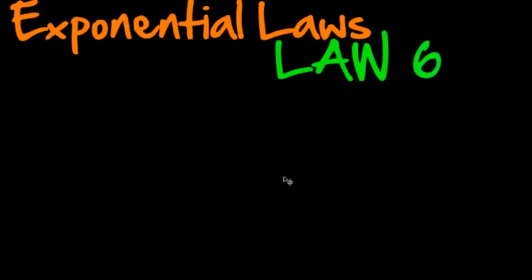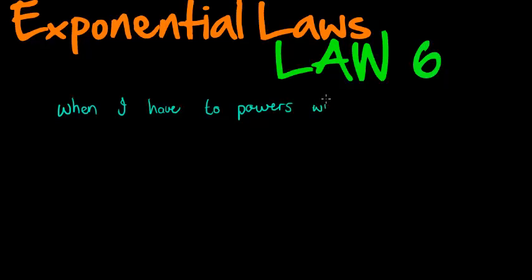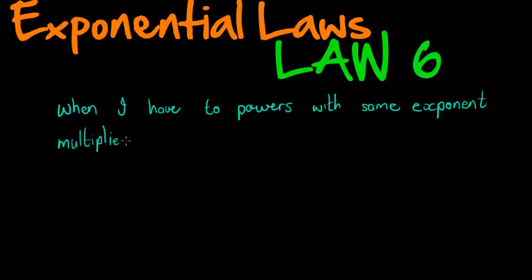So finally we've come to our last exponential law. This law is fairly simple to understand, but it seems like most students actually have difficulty applying it. It says: when I have two powers with the same exponents — that's different, the same exponents — multiplied together, so I'm multiplying two powers with the same exponent, in other words a base with an exponent multiplied by another base, let's call that 'a', with the same exponent.